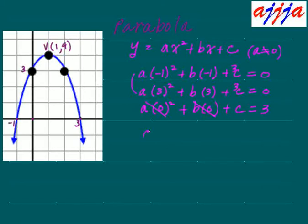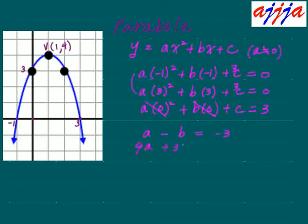Now we can make two new equations. Negative 1 times negative 1 is 1, so we get: a minus b equals negative 3 — moving 3 to the right-hand side. For the second equation, dividing by 3: 3a plus b equals negative 3, also moving 3 to the right-hand side.